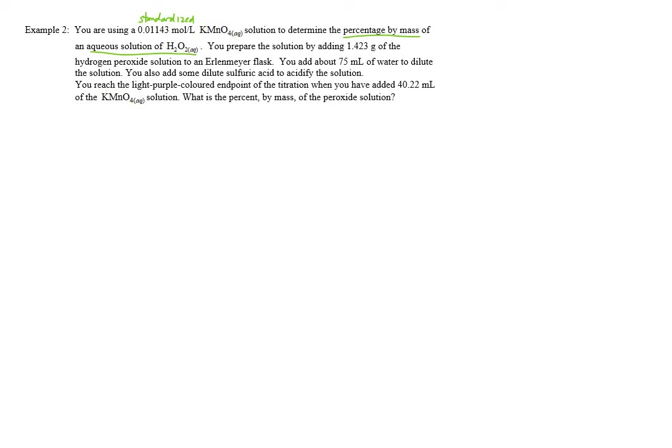So you prepare the solution, meaning the solution that you are going to use as your sample, by adding 1.423 grams of the original hydrogen peroxide solution to an Erlenmeyer flask. So let's say this is your Erlenmeyer flask over here. Let's keep track of what we have in there. So we've got now 1.423 grams of this H2O2 solution, an aqueous solution of hydrogen peroxide.